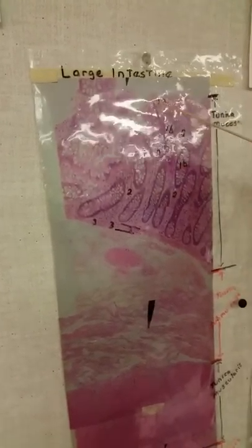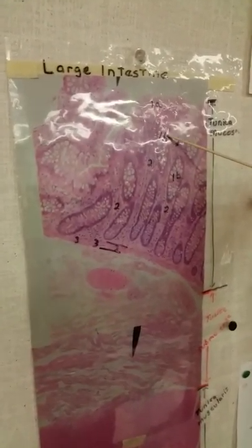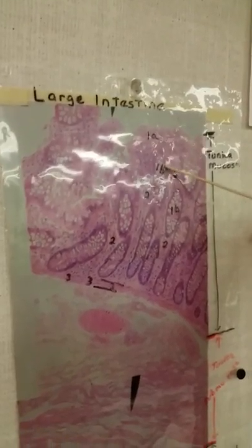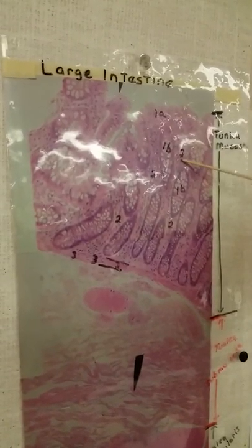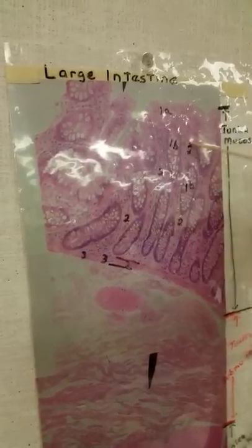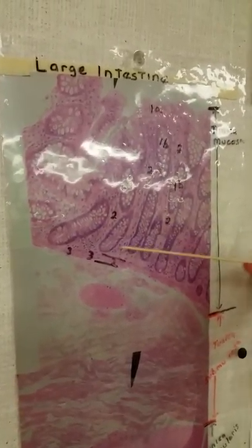This 1A would be the central columnar epithelial tissue, of which this is here. And then this would be the large intestinal crypts. And this is connective tissue. And this is the muscularis mucosa.